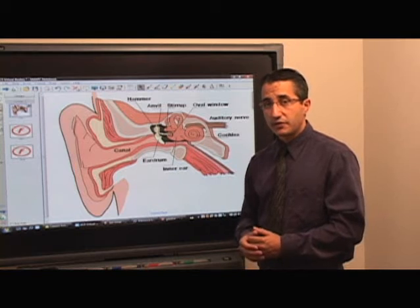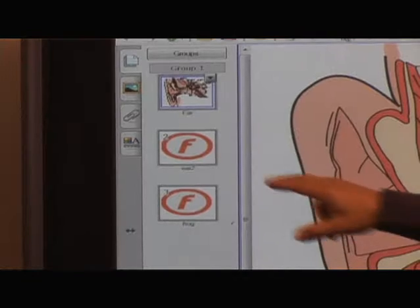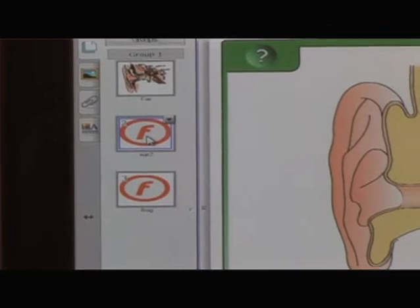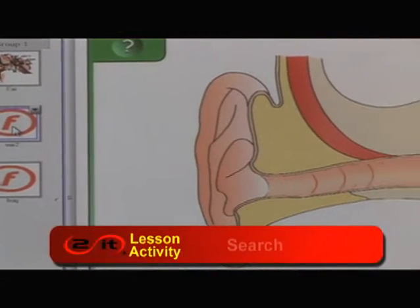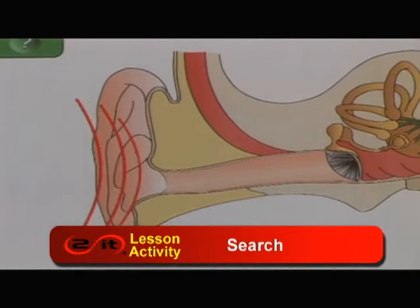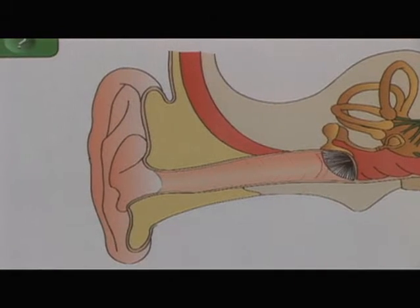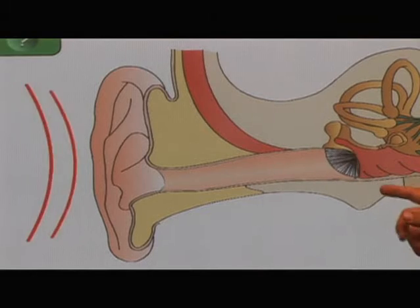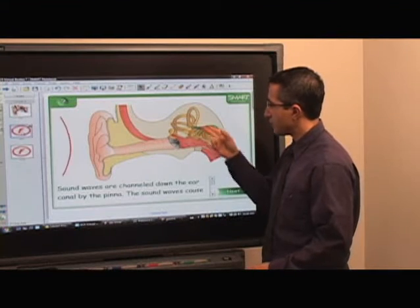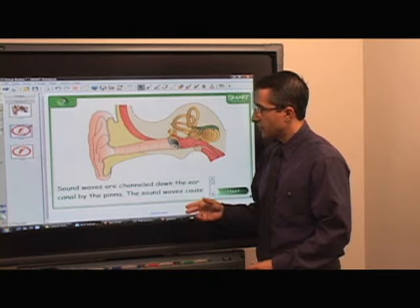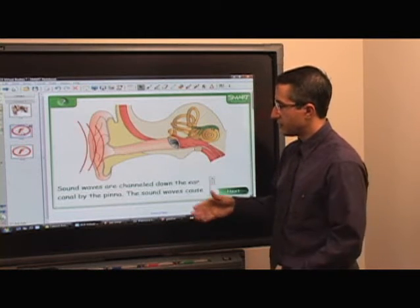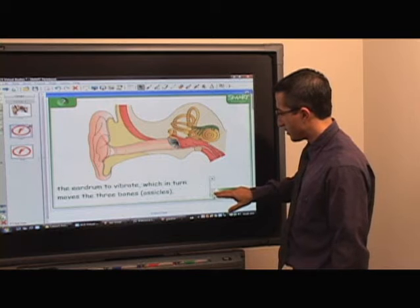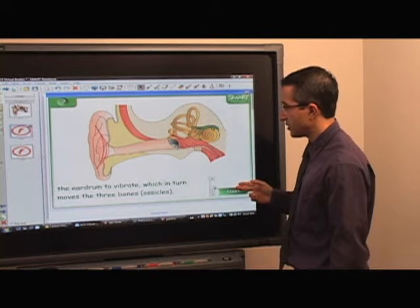We're going to take this a step farther now by going into an animation, which is here on page two. This is a flash object that is found in the Notebook Gallery. If you just look for 'Ear,' you will find this. We have something that shows the sound waves going in, and you can also tell that something is happening within the inner ear. This is a side crosscut, and there's text which I can scroll through by clicking the scroll button.